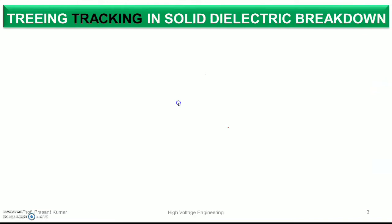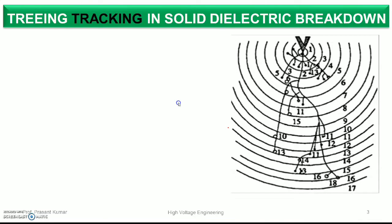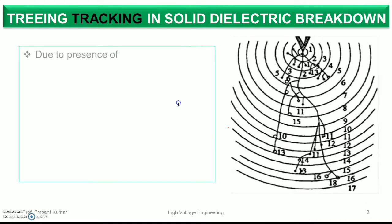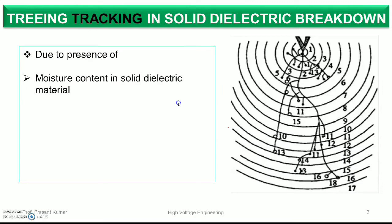When treeing occurs in a solid dielectric material, it means breakdown has started or breakdown has occurred. Now let's talk about the causes: breakdown generally — treeing and tracking — occur due to several reasons. The most important reason is moisture content in the solid dielectric material.